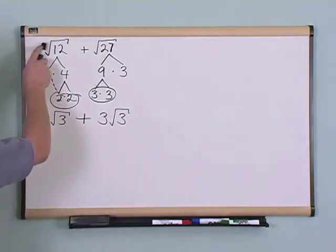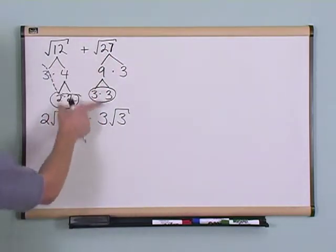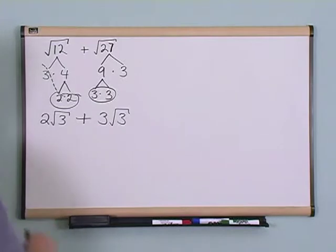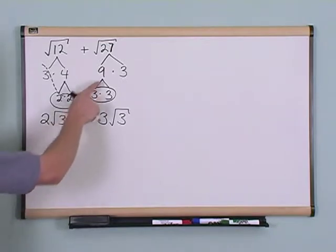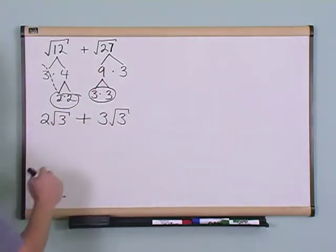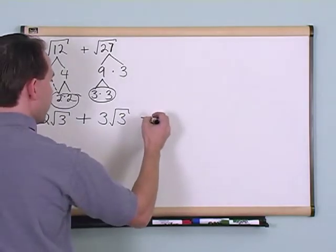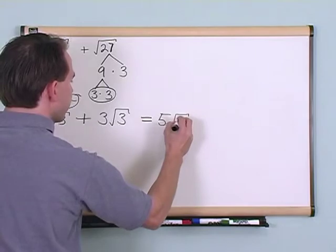So we have reduced the problem from something that looks unfriendly and different to something that looks, believe it or not, a little bit better. Because notice here, in the first term, I have 2 times the square root of 3. In the second term, I have 3 times the square root of 3. I'm going to tell you what the answer is, and then we're going to talk about why. This is going to equal 5 times the square root of 3.